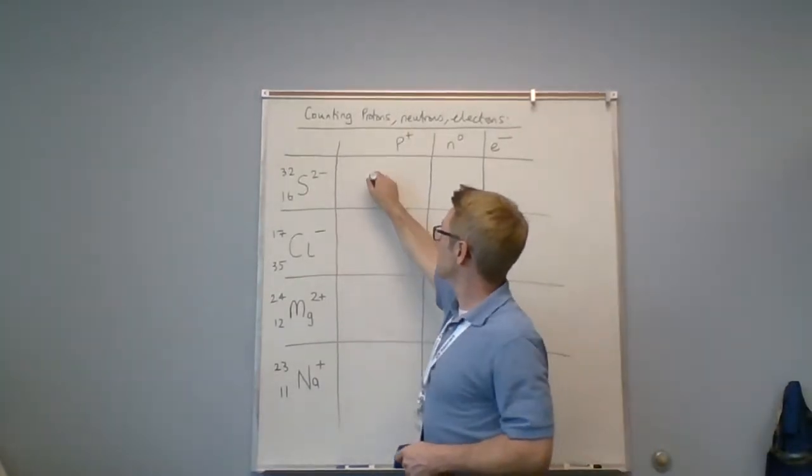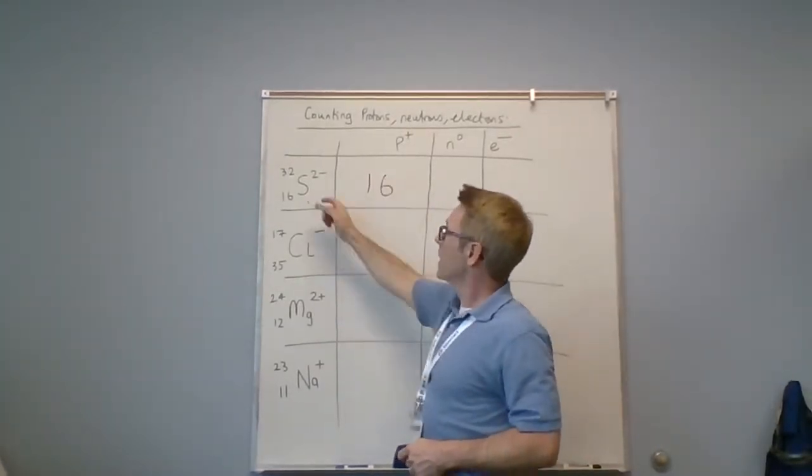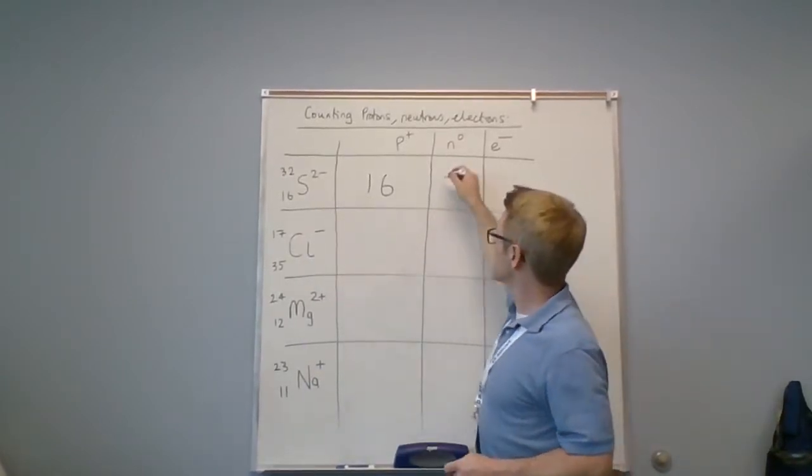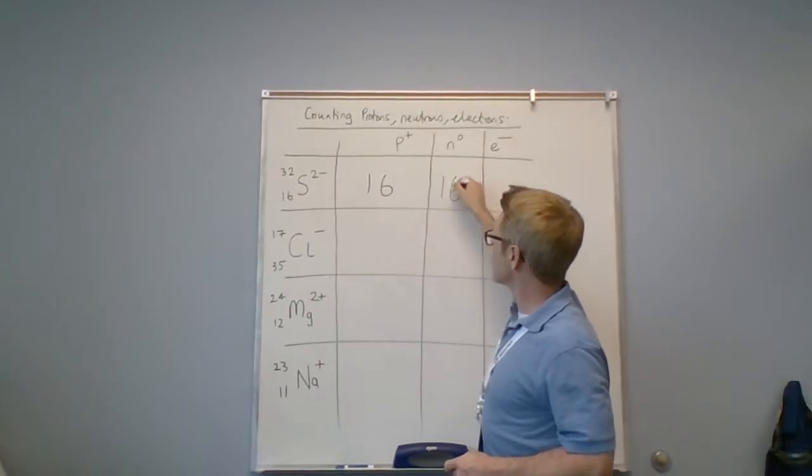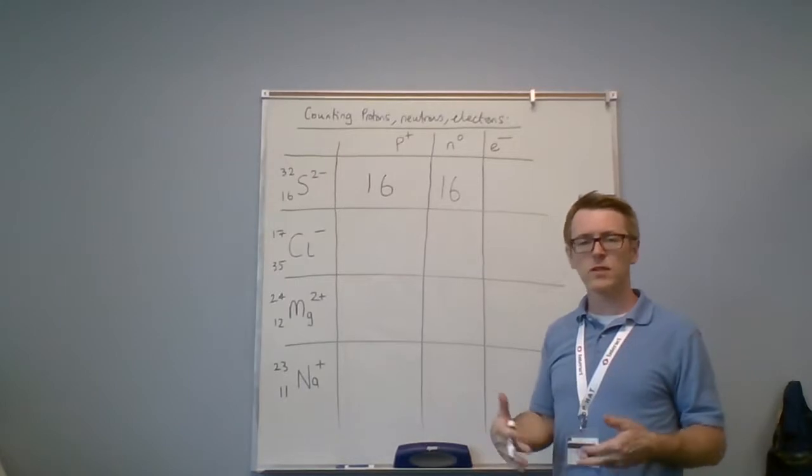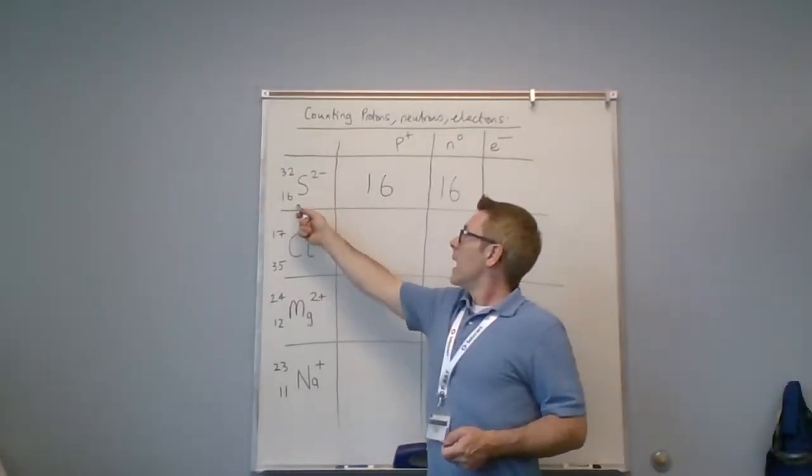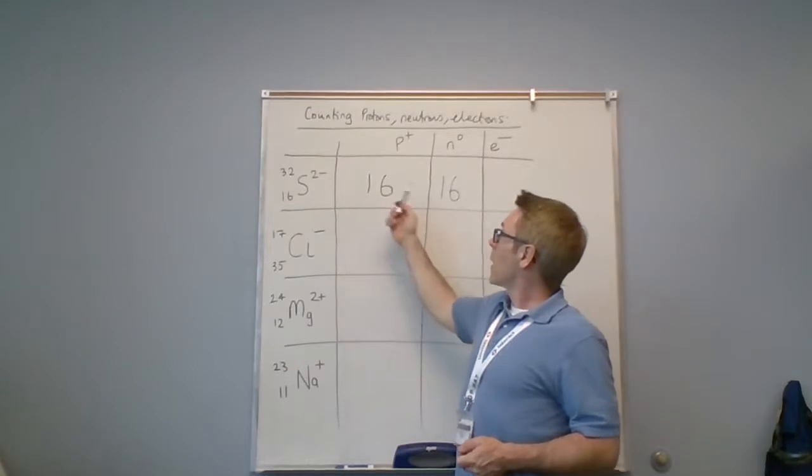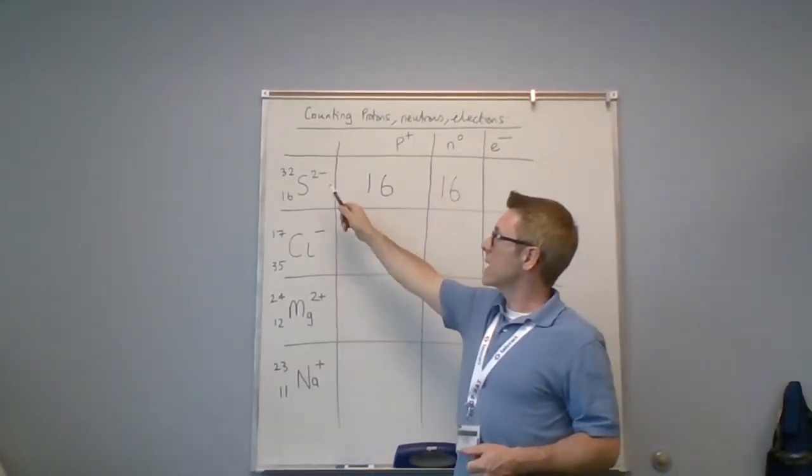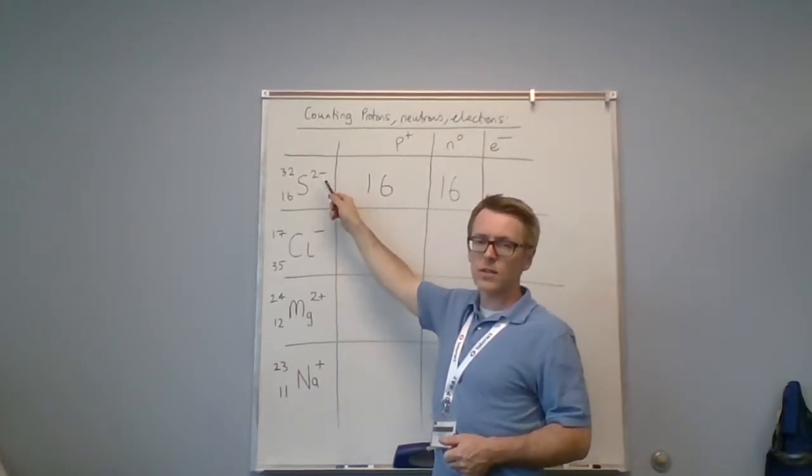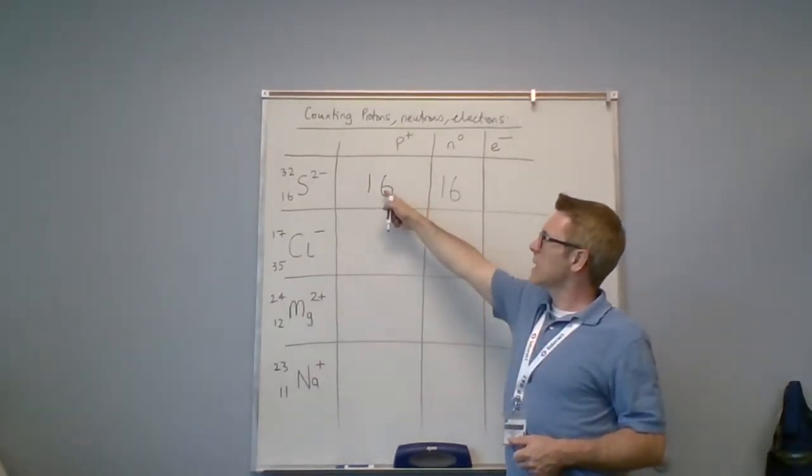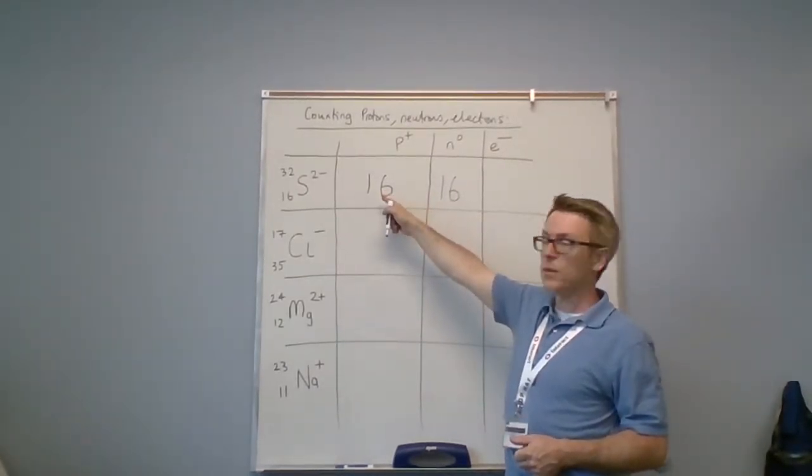I would do neutrons next. 32 minus 16 is 16, so I have 16 neutrons. I would always do electrons last—that would be a preference, but there's no strict rule. Ordinarily I would have 16 electrons to offset the 16 protons, but on this occasion I've got a net 2- charge, so I've got two additional electrons. So 16 electrons cancels the 16 protons, but then I've got an extra two—18 electrons total. The extra two electrons give me a net two negative charge.